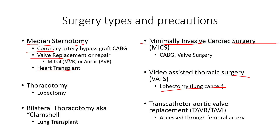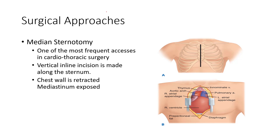Video-assisted thoracic surgeries for lobectomies are very similar to the mixed procedure where a robot assists with the procedure and minimizes the surgical scar. That first approach — the median sternotomy — is exactly as it sounds if we break down the Latin root: median means right down the middle, and sternotomy means opening up the sternum. It's a vertical incision along the sternum, then we open and retract the sternum to expose the mediastinal structures, making the heart easily visualized.